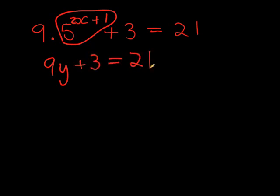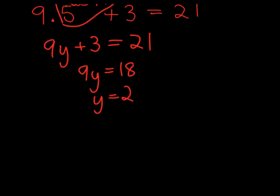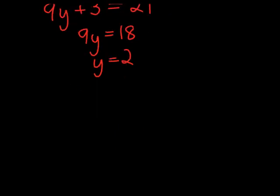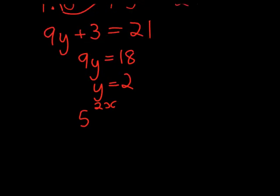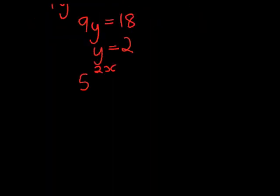Well, we could have done this since primary school actually. So to solve that, I get 9y equals 18. Therefore y must be equal to 2. Now remember y is just a placeholder. It was taking the place of 5 to the power of 2x plus 1. It was just a placeholder for that factor.